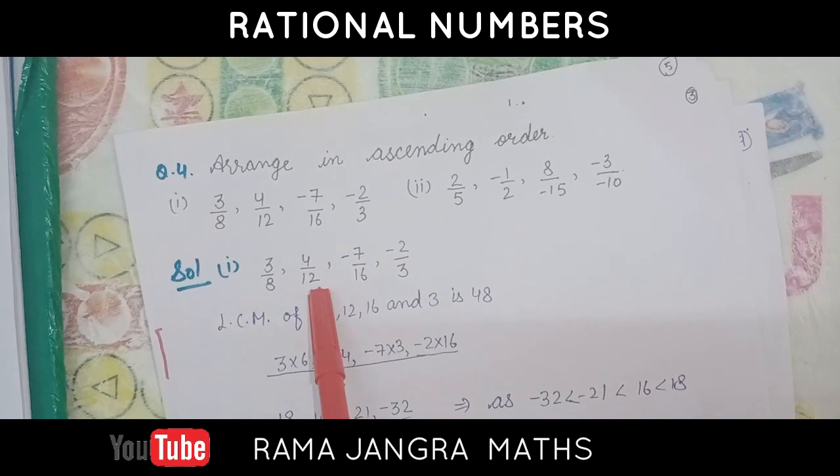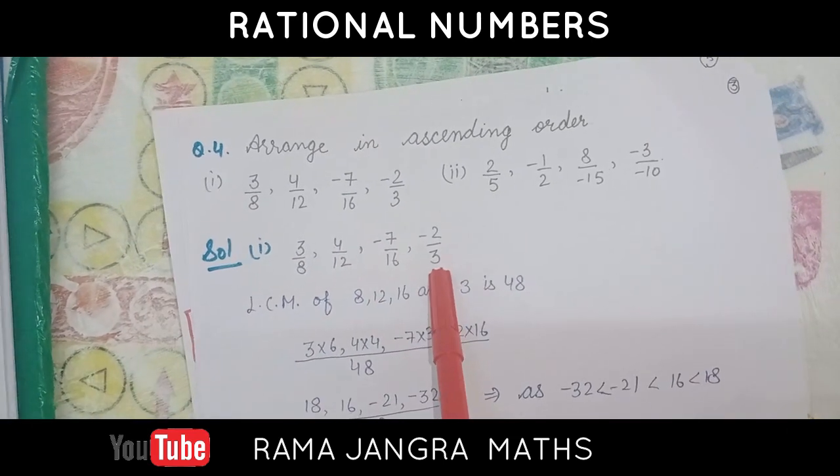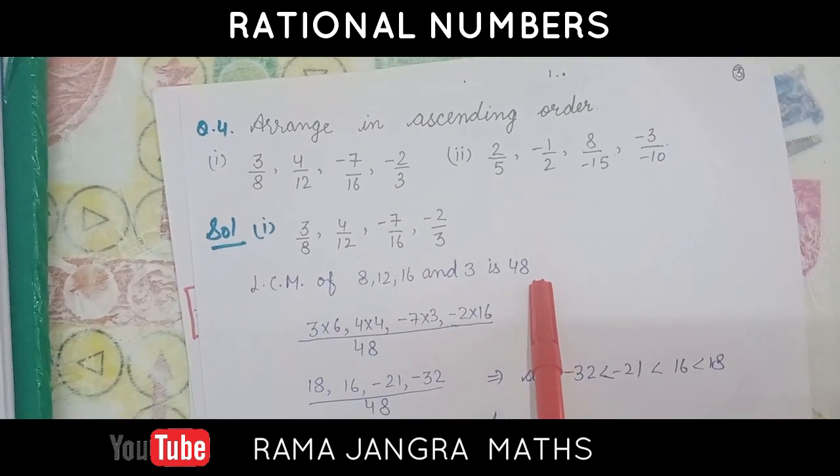Denominators are 8, 12, 16, 3. So, their LCM is 48.